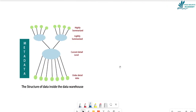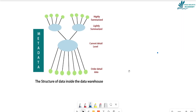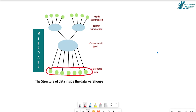Now, if we talk about the data warehouse inside architecture, there are four things: highly summarized, lightly summarized, currently detailed, and order detail. If we talk about order detail, this is a store where massive information is stored. This is the lowest level, where there is mass storage of data.